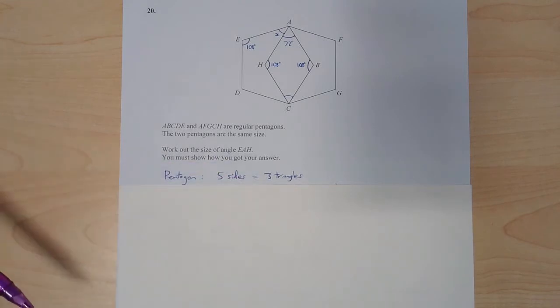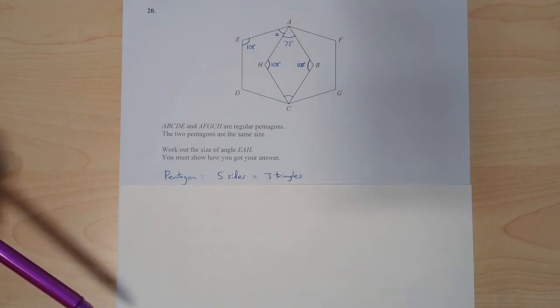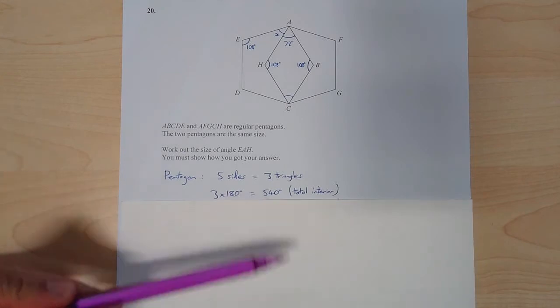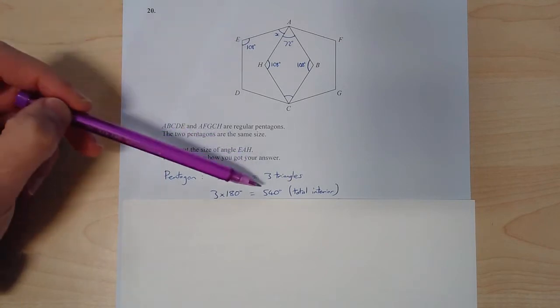It's always two less the number of triangles to the number of sides. So if I can split a pentagon into three triangles, three lots of 180 gives me 540. So that is the total for the interior angles of a regular pentagon, well for any pentagon in fact.